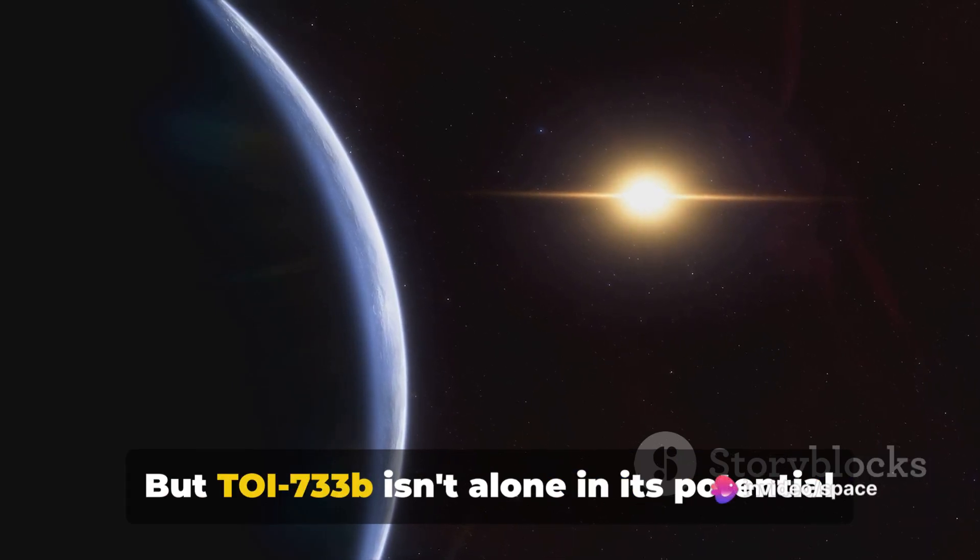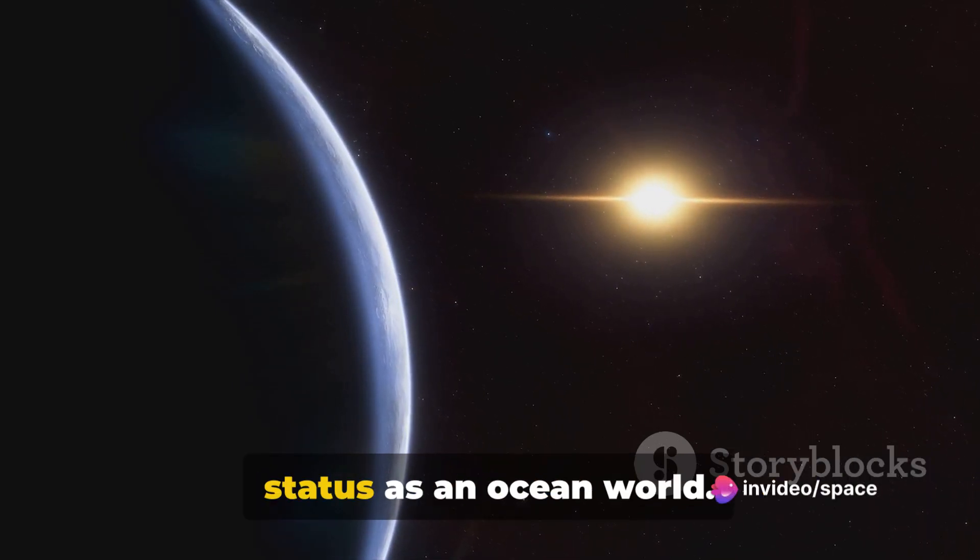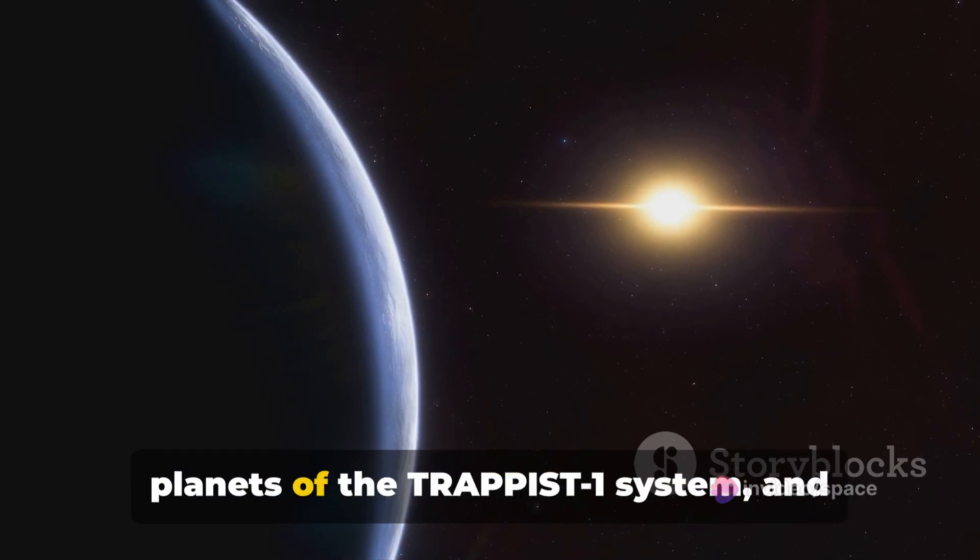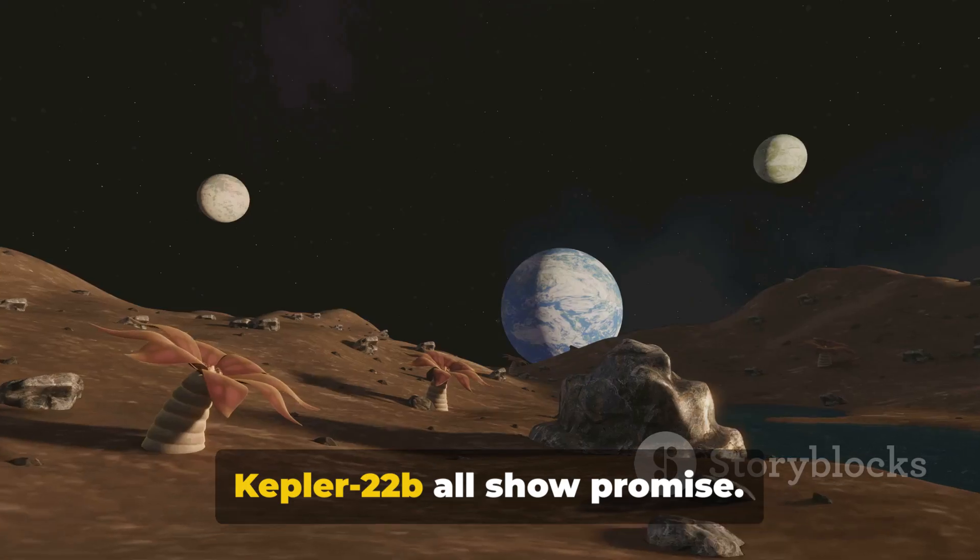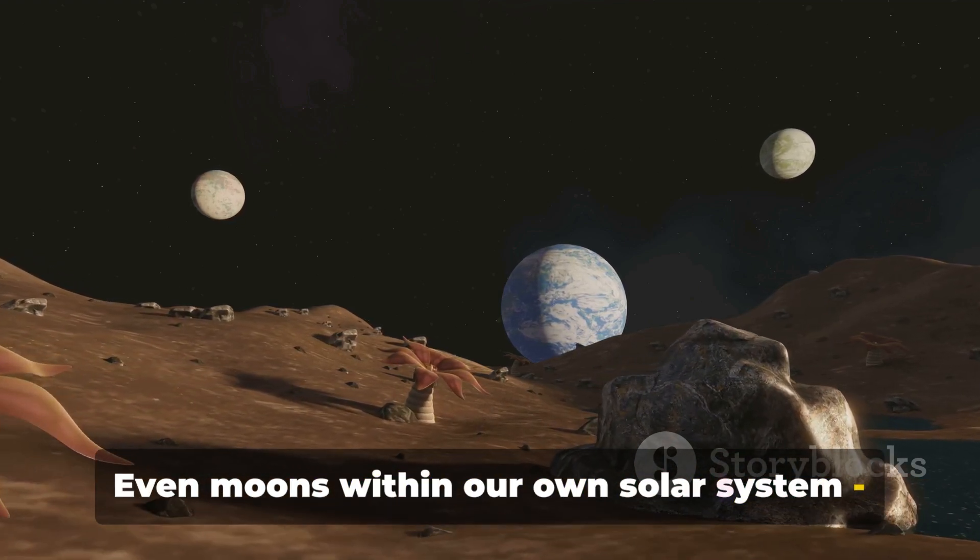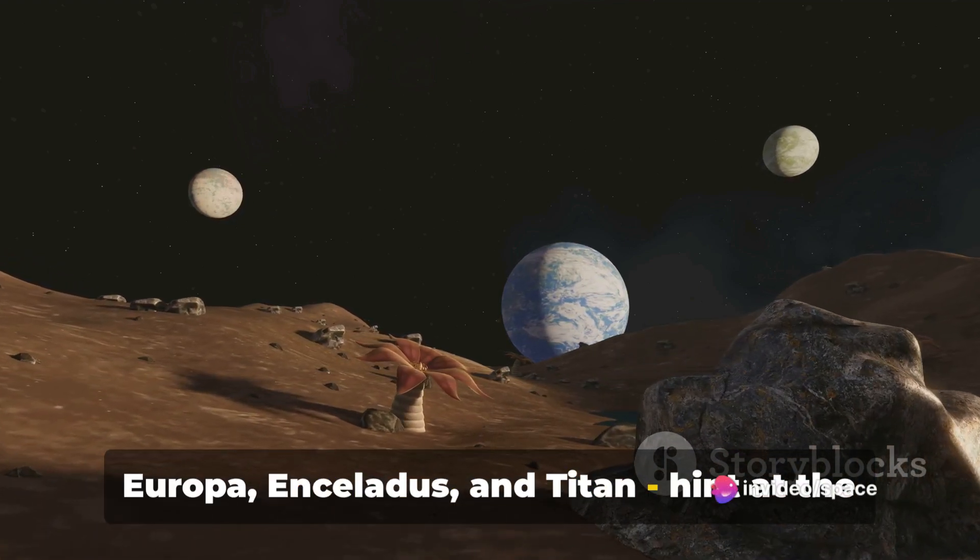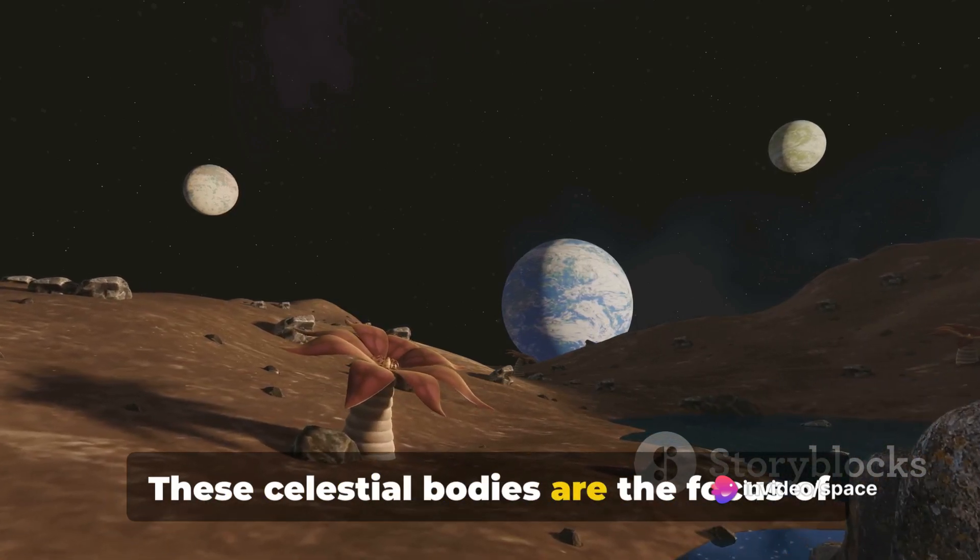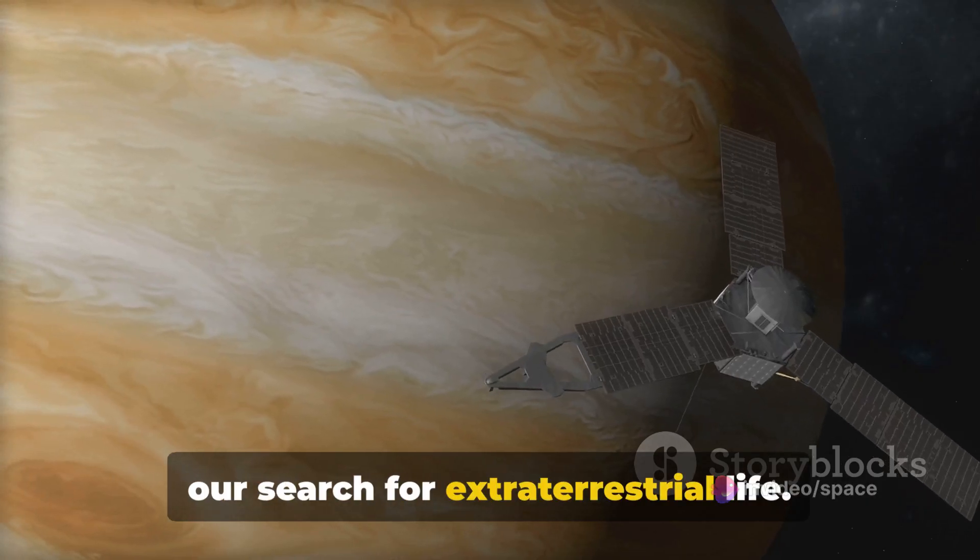But TOI-733b isn't alone in its potential status as an ocean world. Exoplanets like Proxima Centauri b, the planets of the TRAPPIST-1 system, and Kepler-22b all show promise. Even moons within our own solar system—Europa, Enceladus, and Titan—hint at the existence of subsurface oceans. These celestial bodies are the focus of our search for extraterrestrial life.